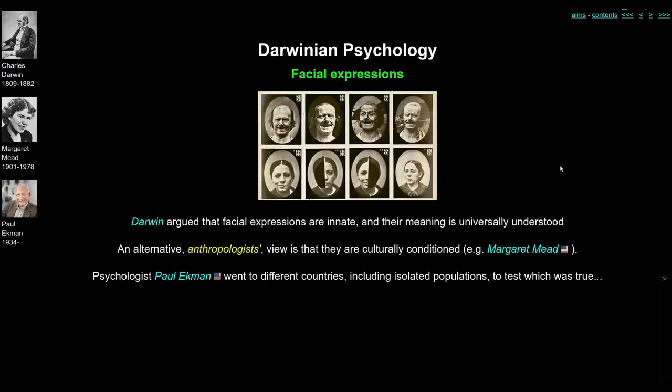In a more mainstream psychological topic, Darwin talked extensively about facial expressions in his book The Expression of Emotions in Man and Animals. He argued that facial expressions are innate and that their meaning is universally understood across cultures — so a face from someone in the Philippines should be understood by someone in Africa. An alternative viewpoint from anthropologist Margaret Mead held that emotions are culturally conditioned, so emotional expressions in the United States would differ from those in Russia. This argument was partly settled when Paul Ekman, a psychologist from the United States, went to different countries and looked at isolated populations to test which view was correct.